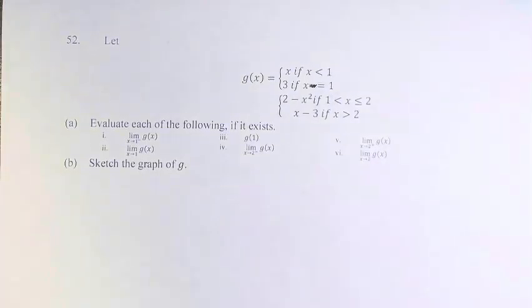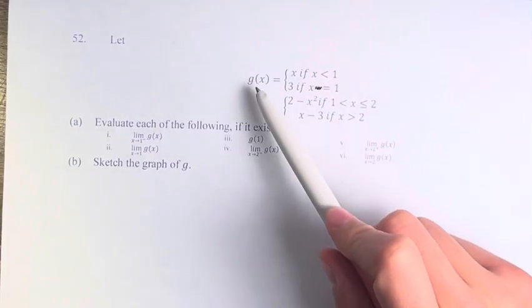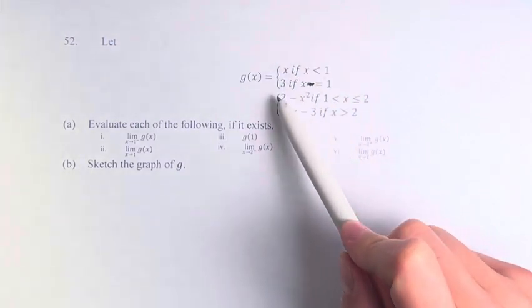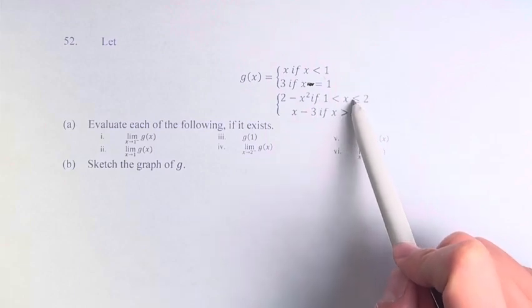Hello and welcome back to another video. In this problem we're told to let g(x) equal x if x is less than 1, 3 if x equals 1, 2 minus x squared if 1 is less than or equal to x is less than or equal to 2, and x minus 3 if x is greater than 2.